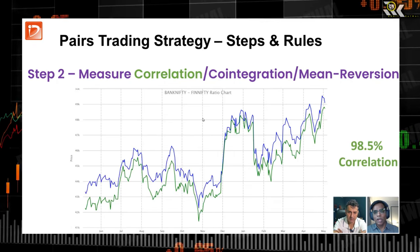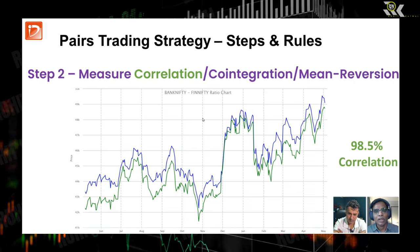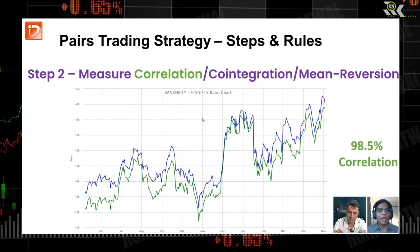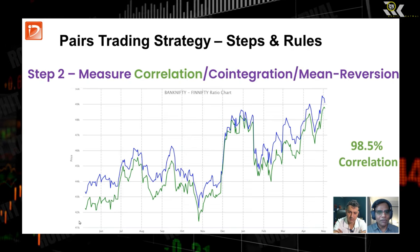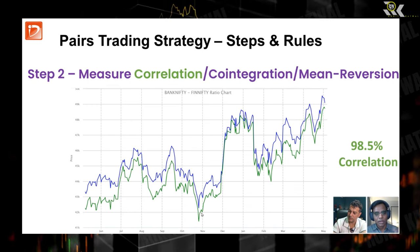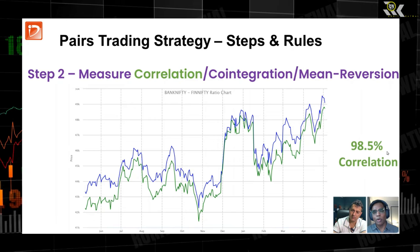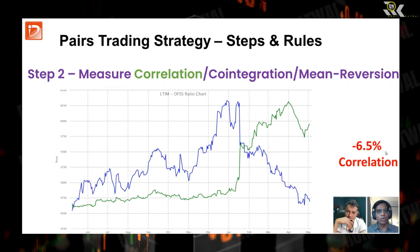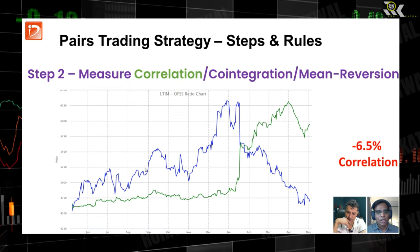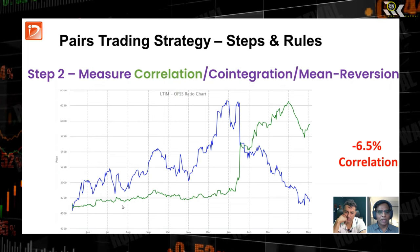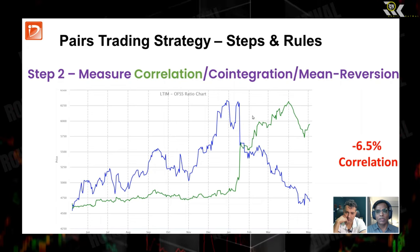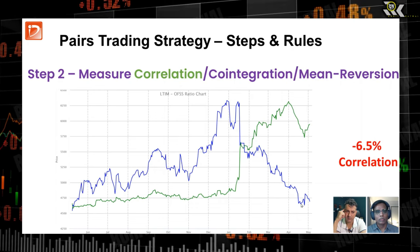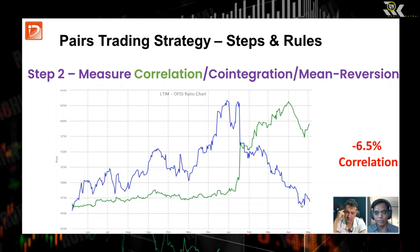For example, Bank Nifty and Fin Nifty are both from the finance field, with some common stocks between them. They face the same risks and tailwinds, and tend to move in the same fashion. As you can see from the chart, they're more or less moving in the same direction and magnitude, with a 98.45% correlation — highly correlated instruments. In contrast, LTIM and OFSS stocks show no correlation: one is bullish while the other is sideways, then they reverse. We are not interested in these kinds of pairs.